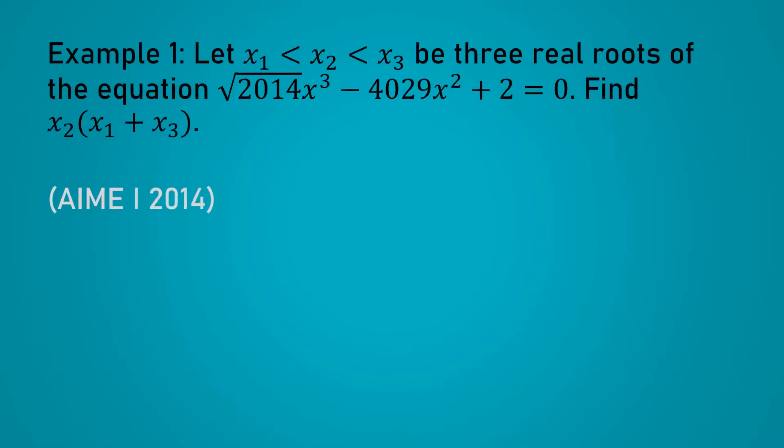To illustrate this, let's start with an example from the 2014 AIME. x1, x2, and x3 are the roots of this equation: square root 2014 x cubed minus 4029 x squared plus 2 equals 0. We are asked to find x2 times x1 plus x3. Pause the video here if you would like to think about this for a moment.